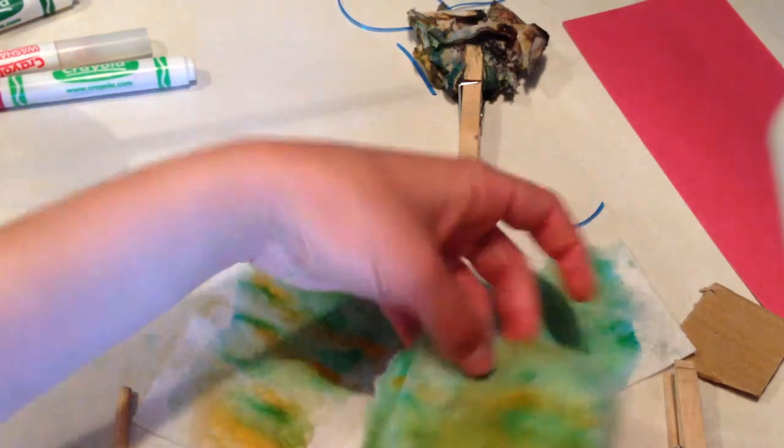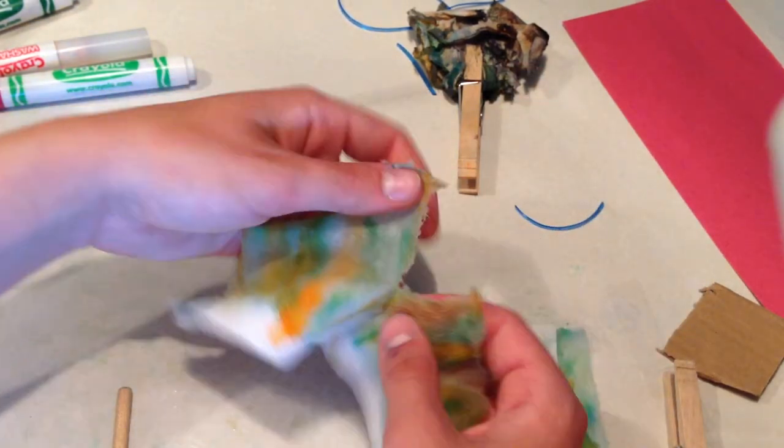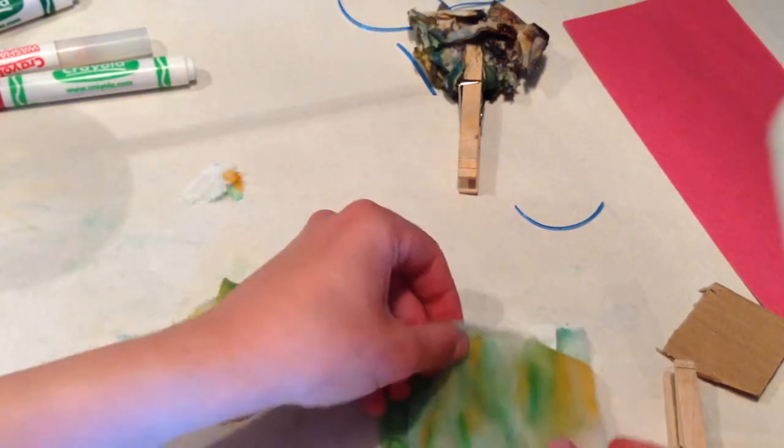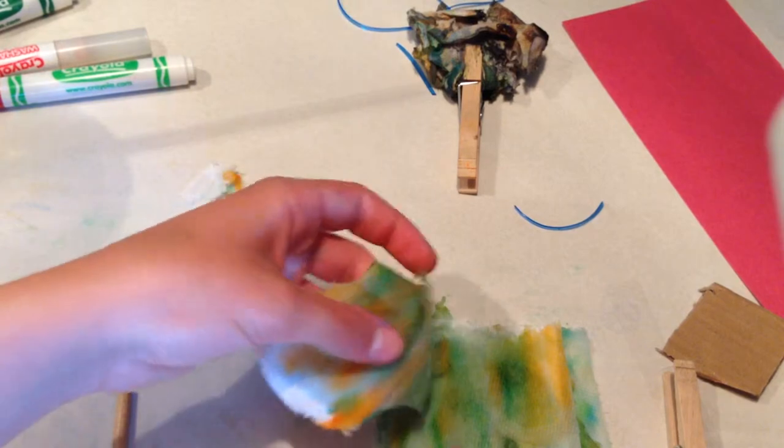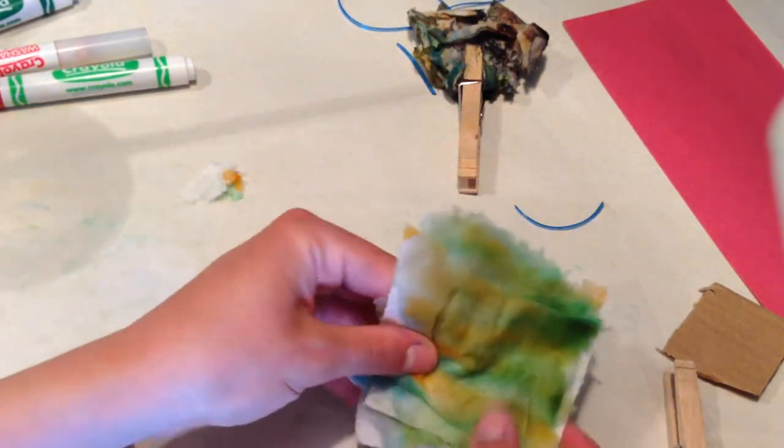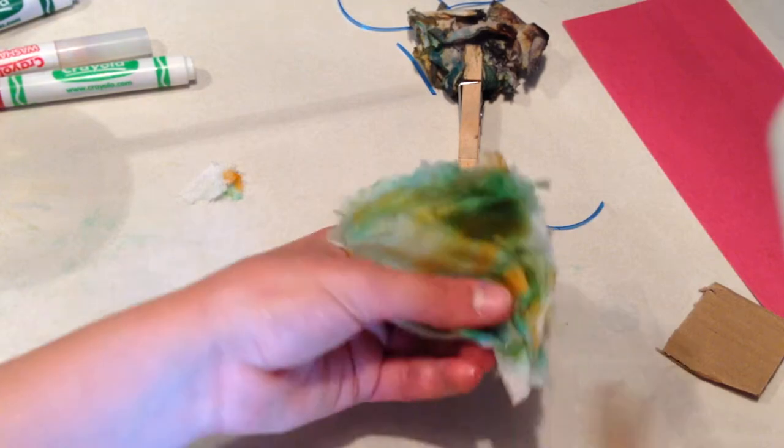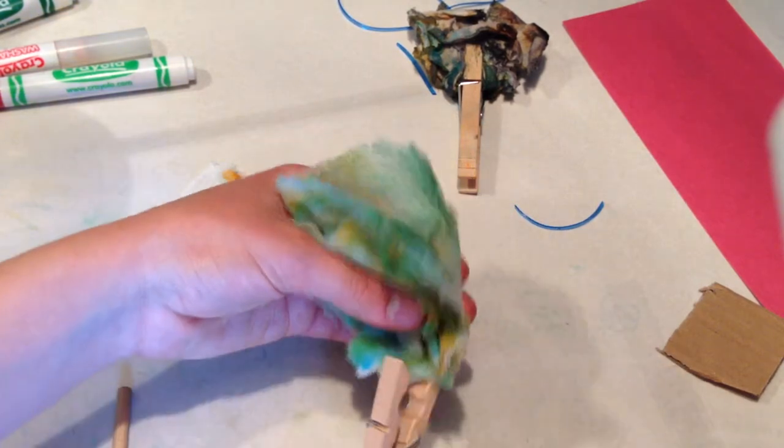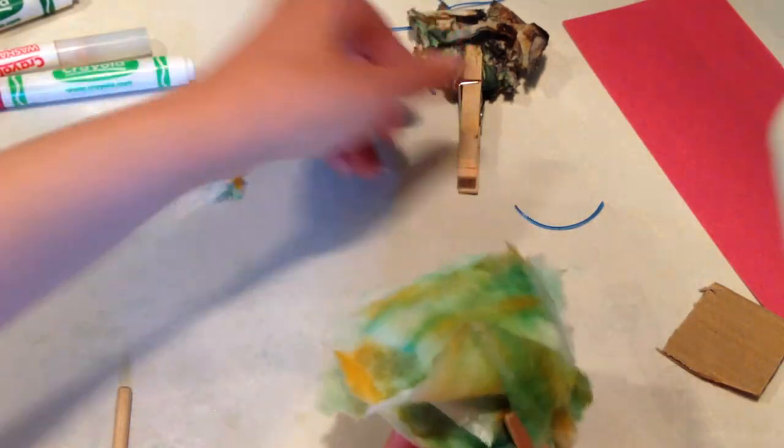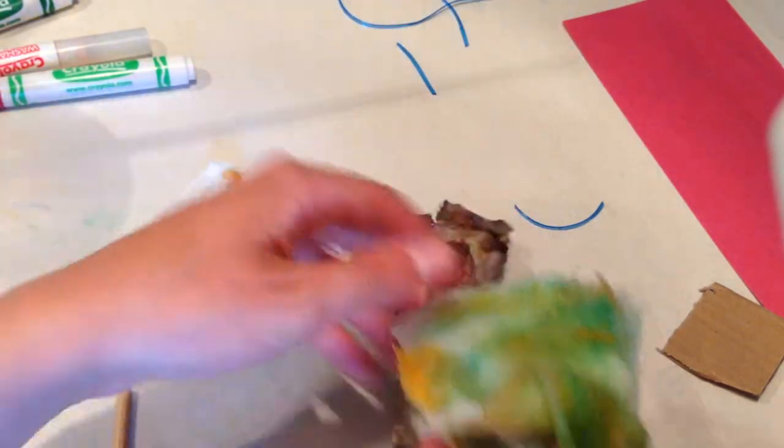Stack them on top of each other as you go. These are going to be like the petals of your flower. Once they're all stacked, bunch them a little at the bottom. Take the clothespin and clip them together. When they dry, they'll take on the rumpled shape of a flower.